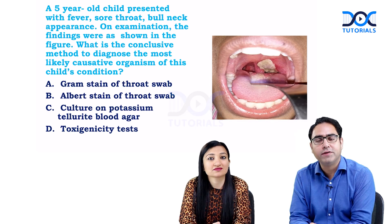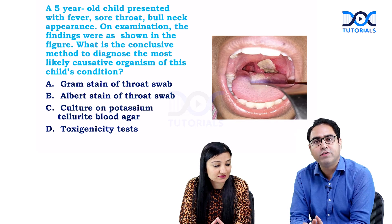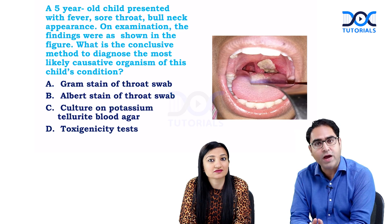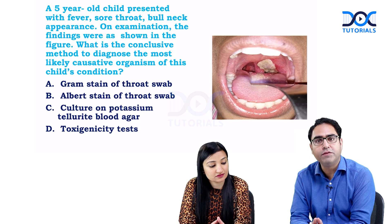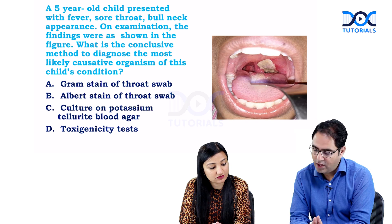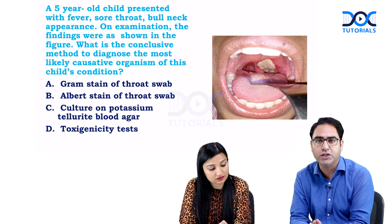Hello friends, this is Dr. Rajiv Dhawan, your ENT faculty, and I have my microbiology colleague with me, Dr. Mamata Java. We are here to discuss an integrated question of ENT and microbiology. The question is about a five-year-old child who has presented with fever, sore throat, bull neck, and the examination finding of the oropharynx is given in the picture. The question is: what is the conclusive method to diagnose the most likely causative organism of this child's condition?